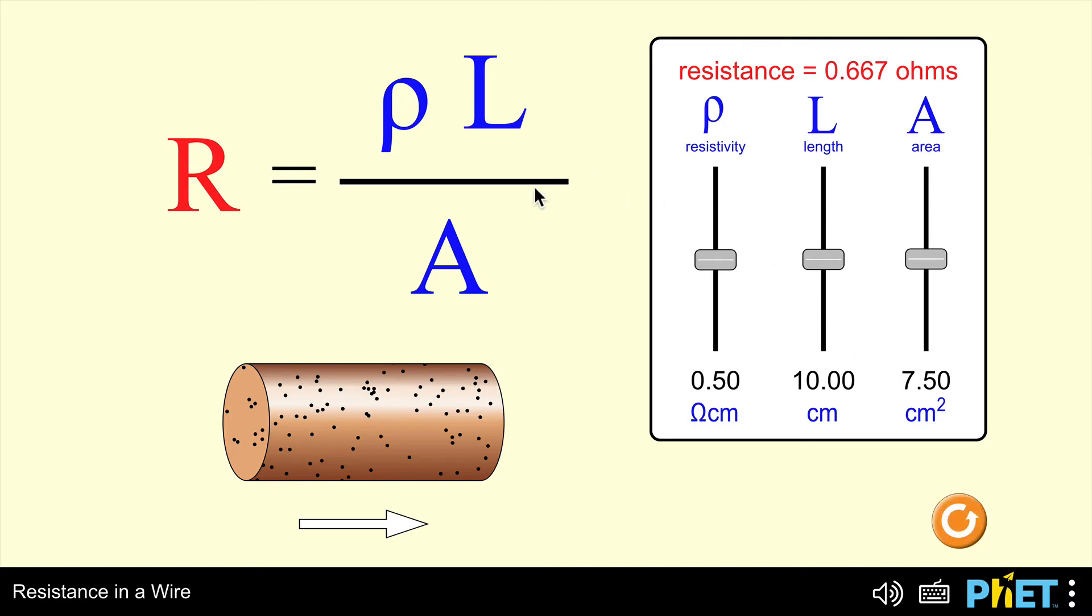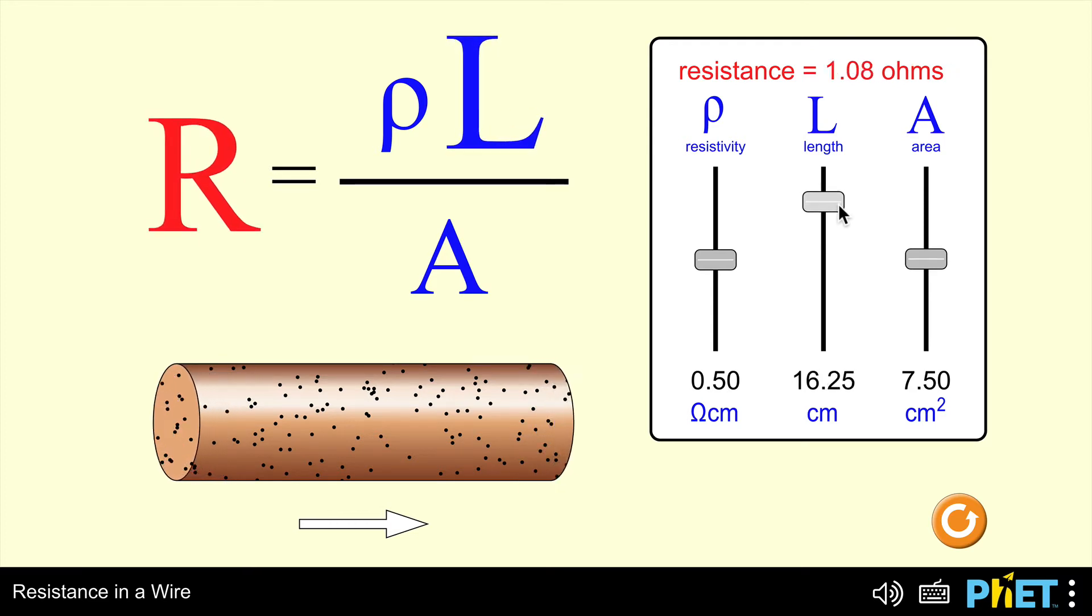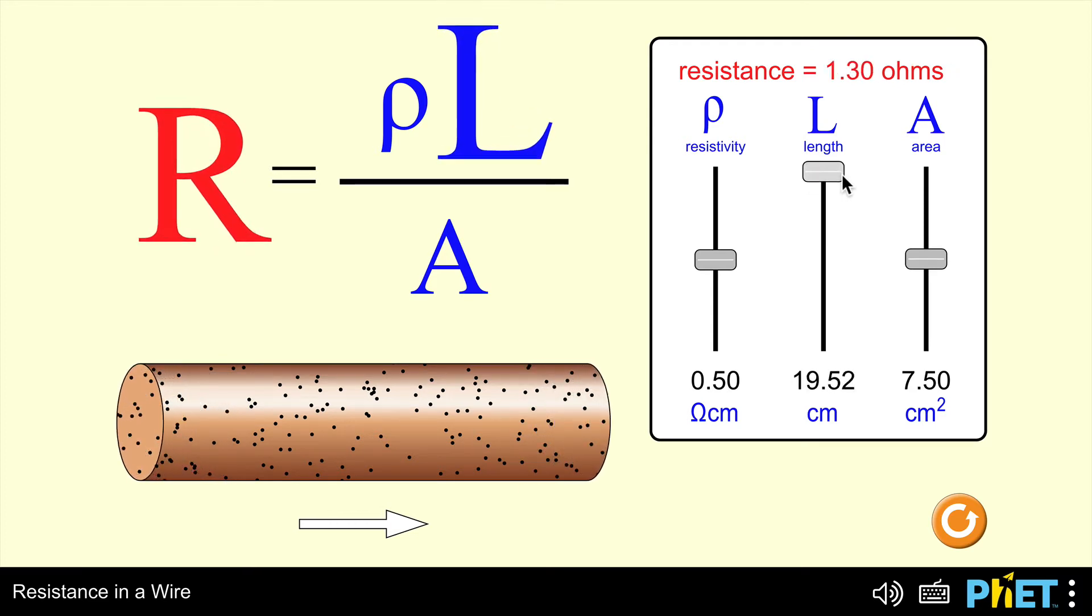You should see, just by looking at the equation, we have L here, the length of the wire in the top line. As that increases, the whole of the right-hand side is going to increase, and therefore, the left-hand side should also increase. As the length of the wire increases, you can see in the animation down in the bottom left that the resistance of the wire is going to increase as well.